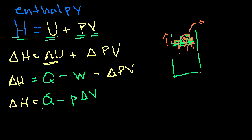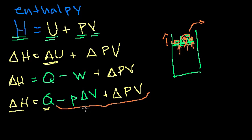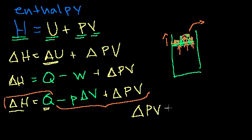So our change in enthalpy can be written as: delta H = Q - P*delta(V) + delta(PV). Something interesting is going on. I wanted to define something to measure heat content. My change in enthalpy will equal the heat added to the system if these last two terms cancel out — if delta(PV) equals P*delta(V). So under what conditions does delta(P*V) equal P times delta(V)? When can I make this statement? Because if I can, then delta H equals the heat added.